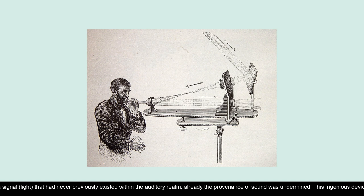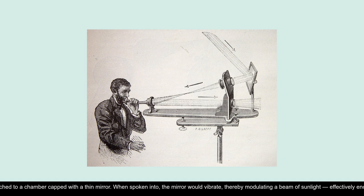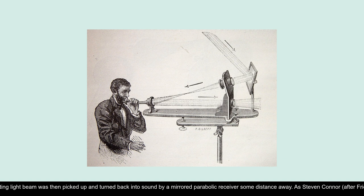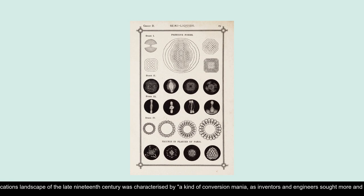This ingenious device consisted of a mouthpiece attached to a chamber capped with a thin mirror. When spoken into, the mirror would vibrate, thereby modulating a beam of sunlight, effectively encoding it with the sound. This vibrating light beam was then picked up and turned back into sound by a mirrored parabolic receiver some distance away. As Stephen Connor, after Friedrich Kittler, has noted, the communications landscape of the late 19th century was characterized by a kind of conversion mania, as inventors and engineers sought more and more ways in which different kinds of energy and sensory form could be translated into each other.